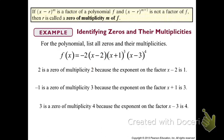What does that mean when we're trying to graph this function? Try to determine what the degree of this polynomial function is. The degree of this polynomial is 8, because you count up all the multiplicities of each zero — 1 plus 3 plus 4 — and we have an eighth degree polynomial. We're going to look at how to graph based on the different multiplicities.